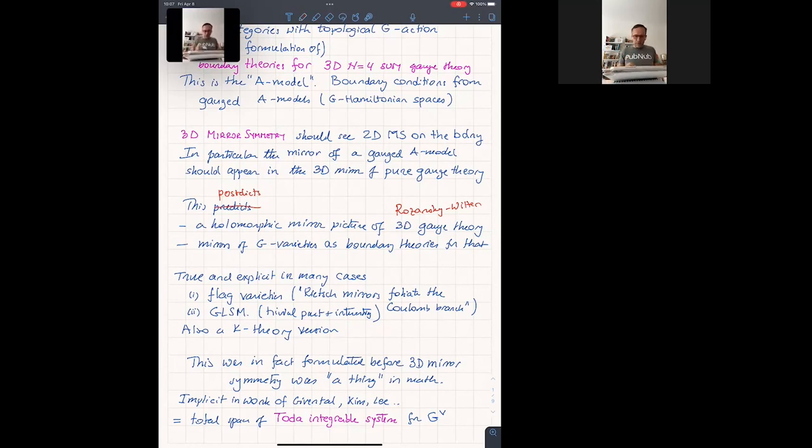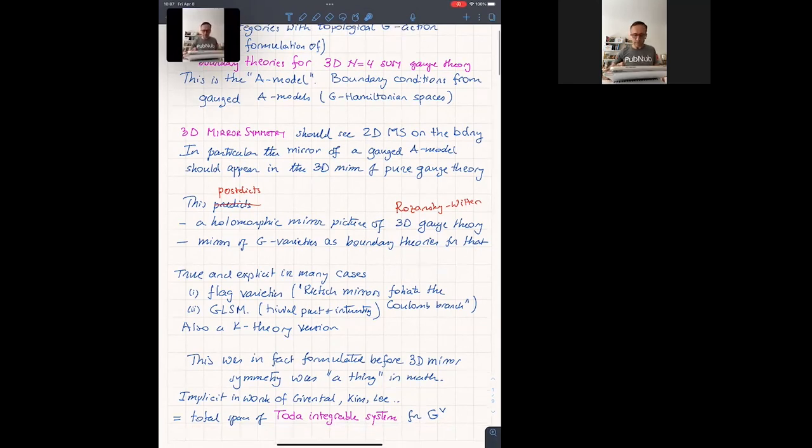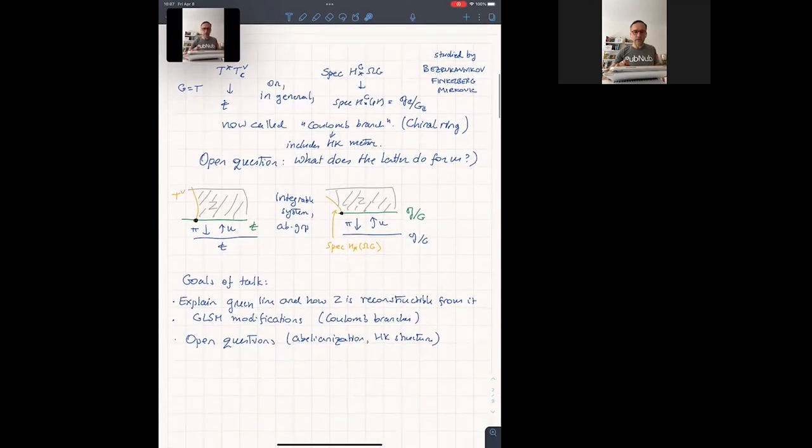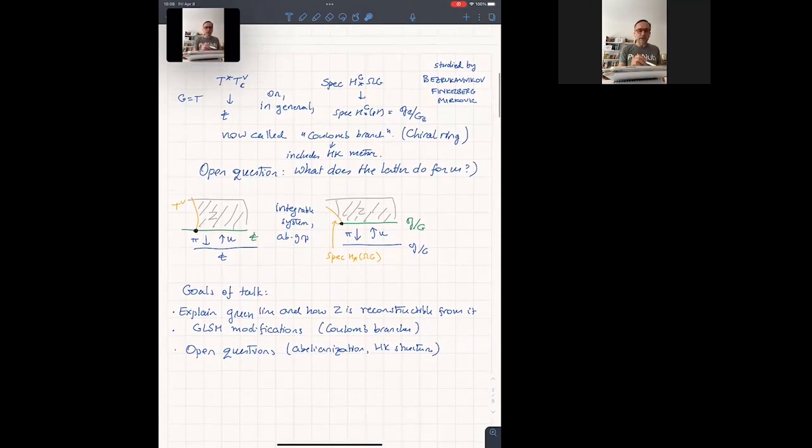But going back to the Rozansky-Witten theory, we already know the mirror of 3D theory. It is a total space of a total integrable system on the Langlands dual group. That's a 3D mirror. Interesting. So let's recall what that is. In the torus case particularly is just the cotangent bundle of the dual torus, and it projects the cotangent fiber, the Lie algebra, the cotangent fiber with complex torus fibers. And that's an integrable system for the obvious symplectic structure and also groups.